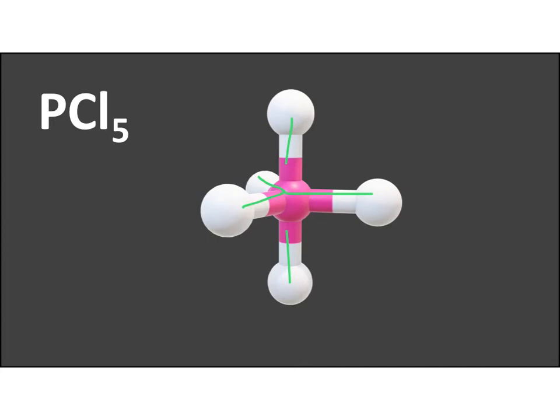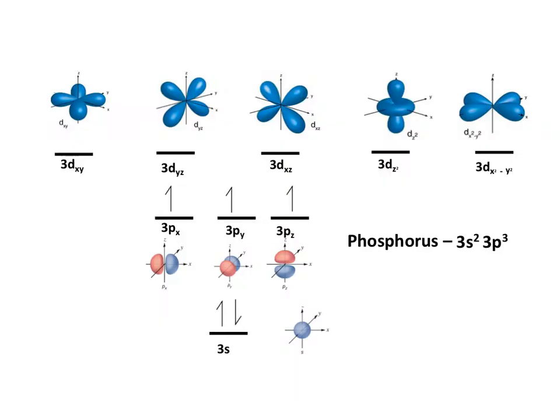So we need to think about, again, the initial electron configuration of phosphorus and how it can rearrange its electrons to form the hybrid orbitals with that configuration. So phosphorus starts as 3s2, 3p3. But of course, if it wants to form five bonds, it's going to need to promote its 3s electron into an orbital.